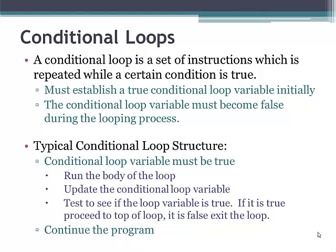A typical conditional loop structure might look something like this. The conditional loop variable must be true before you start the loop. Then you would run the body of the loop. Update the conditional loop variable. Test to see if the loop variable is true. If it's true, run the loop again. If it's false, exit the loop and continue the program.